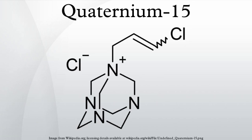Synthesis: Quaternium-15 can be prepared by reacting hexamethylenetetramine with 1,3-dichloropropane to produce the product as a mixture of cis and trans isomers.